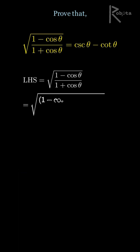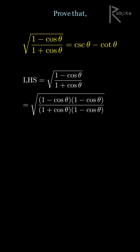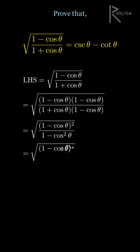So then in the numerator, 1 minus cos theta times 1 minus cos theta becomes 1 minus cos theta all squared. In the denominator, we multiply 1 plus cosine theta by 1 minus cosine theta. That gives us 1 minus cosine squared theta.